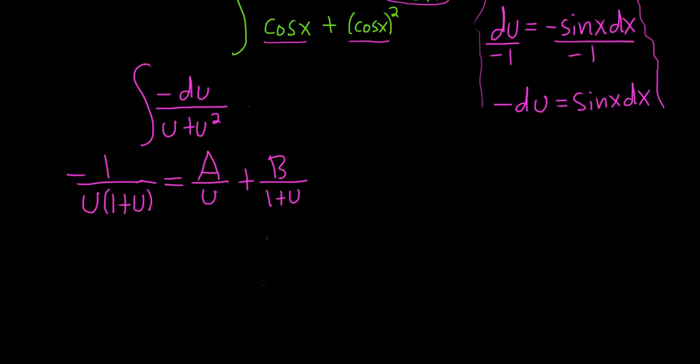All right. And let's go ahead and use what's called the cover-up method. So the cover-up method says that to find a, we just look at what's under a. So u is under a. What makes that 0? Well, 0 makes it 0.